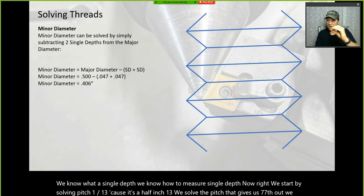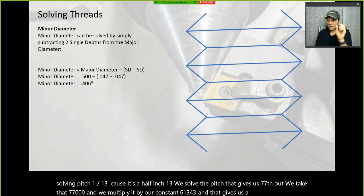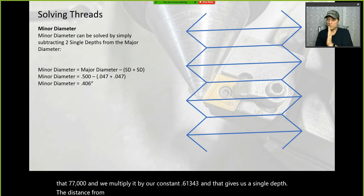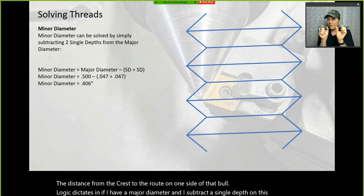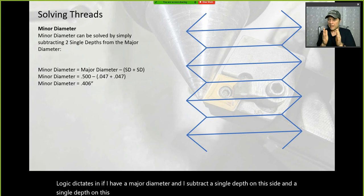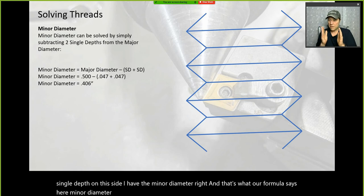We start by solving pitch — one divided by 13 — which gives 77 thou. We take that 77 thou and multiply it by our constant 0.61343, giving us the single depth: the distance from the crest to the root on one side. Logic dictates that if we subtract a single depth on each side from the major diameter, we have the minor diameter.